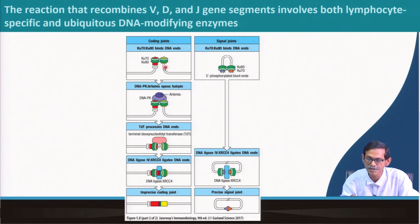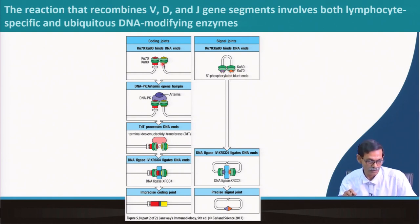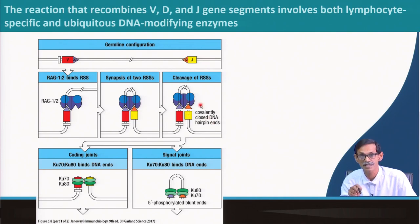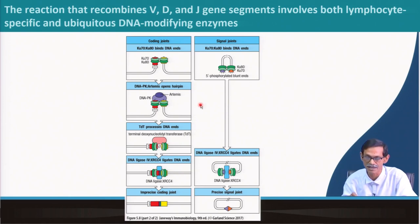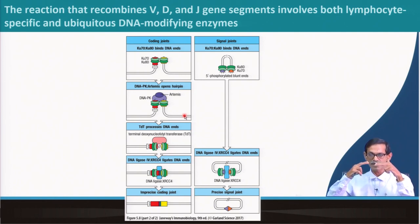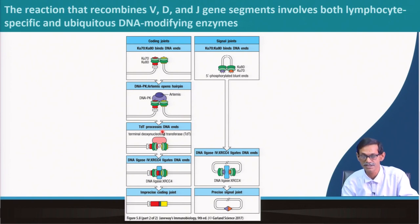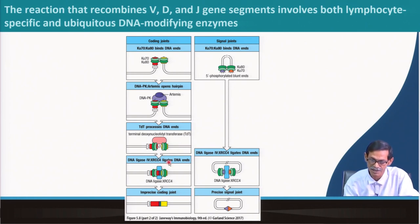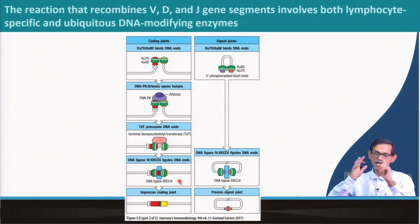KU70 and KU80 bind the covalently closed DNA hairpin ends. Then DNA-PK — the protein kinase — comes in, followed by Artemis. Together they perform cutting and joining. Then TDT polymerase comes in. Then DNA ligase and XRCC4 come together — these are ubiquitous DNA repair proteins: KU70, XRCC4, and DNA ligase are present in all cells.